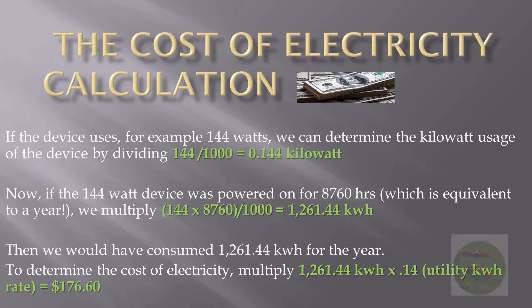Here on the next screen I show you an example. If you take that same 144-watt television — it requires 144 watts to run — and if you were to leave the television on for 8,760 hours, which is about a year, you multiply 144 times 8,760 and then convert to kilowatts by dividing by a thousand. That gives you the usage in kilowatt hours.